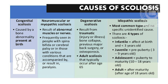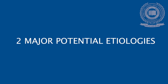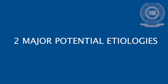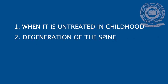Adult scoliosis typically occurs after the age of 65. Idiopathic scoliosis is the most common type with no specific identified cause. The four types of idiopathic scoliosis can be infantile, juvenile, adolescent, and adult. Two major potential etiologies that can lead to progression of scoliosis are when it is untreated in childhood and degeneration of the spine.